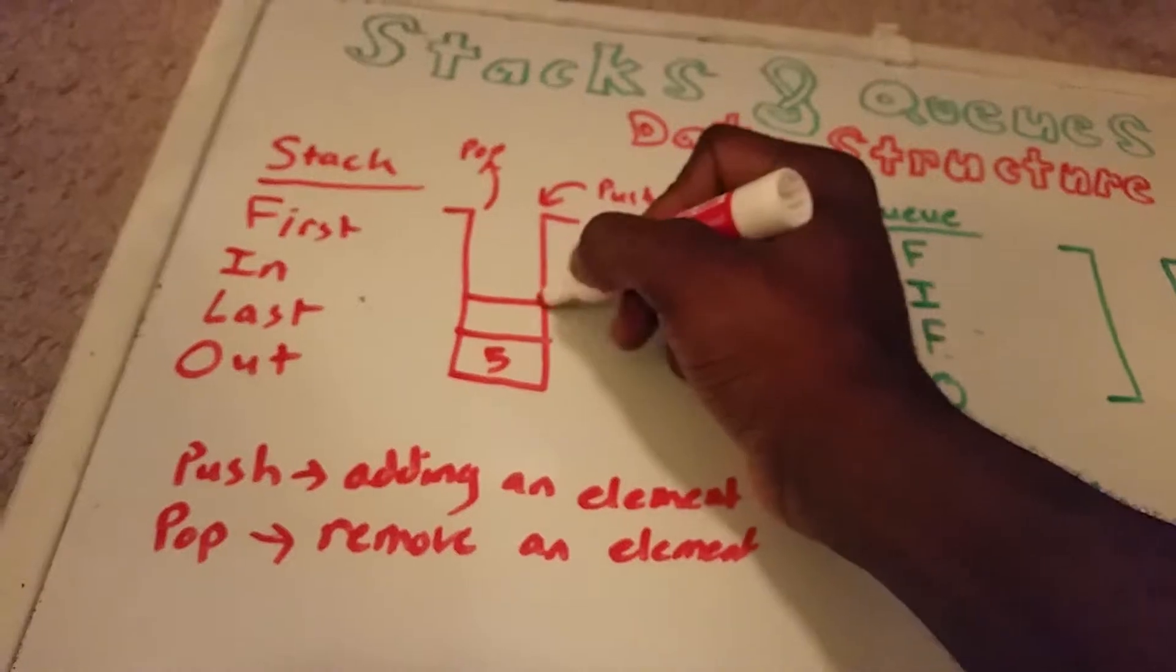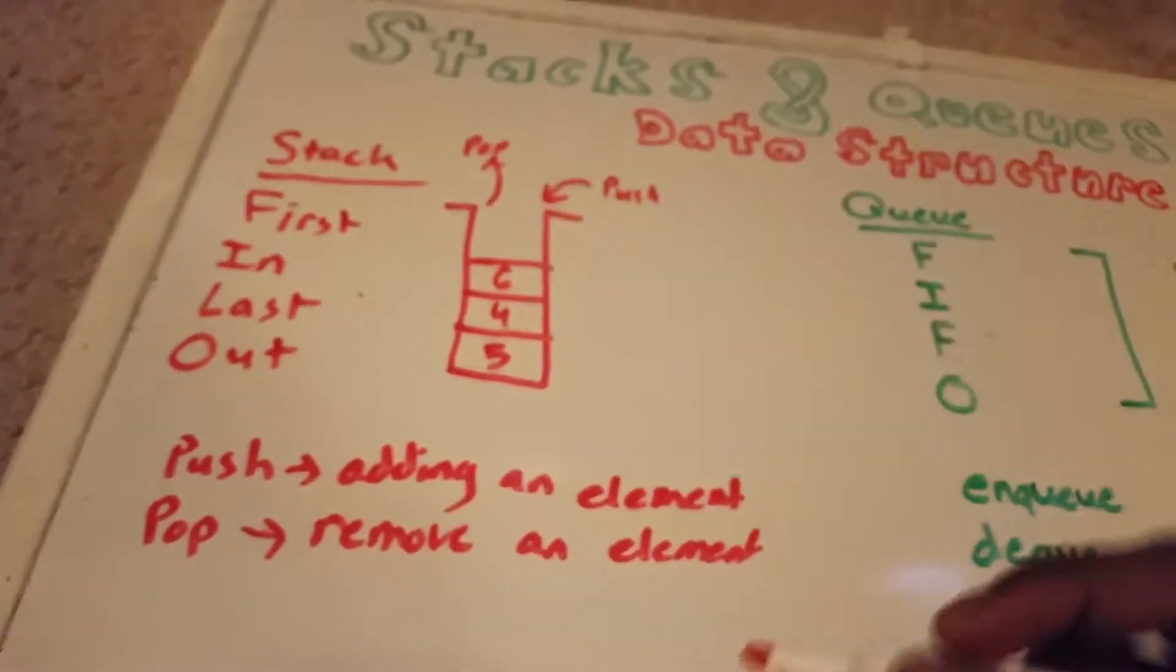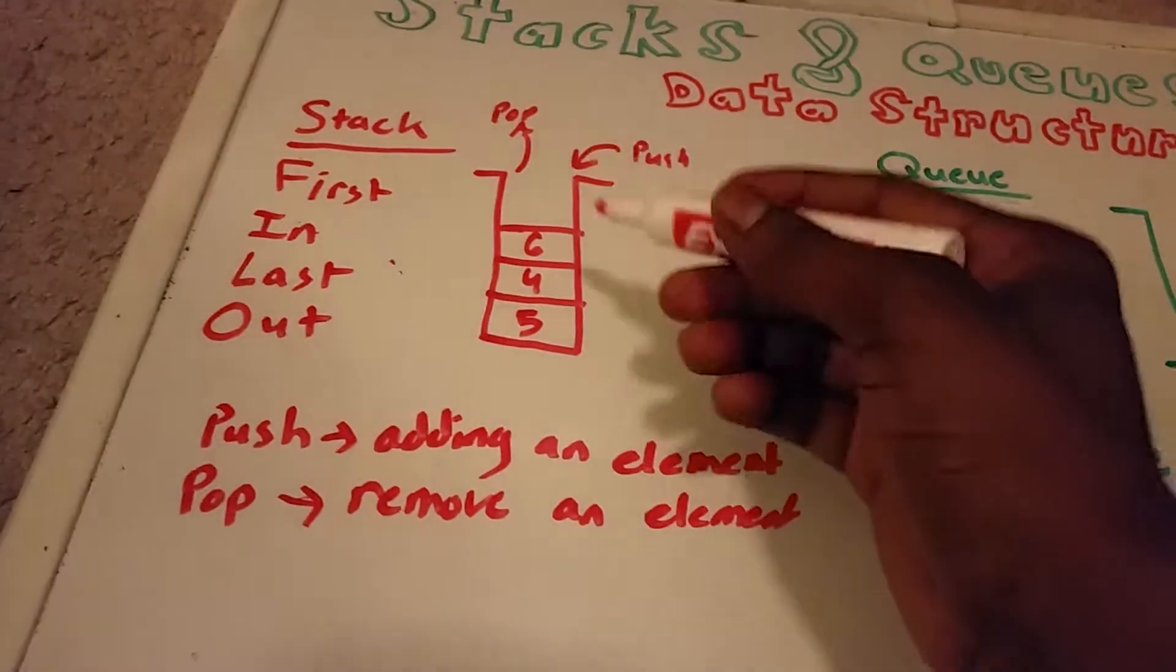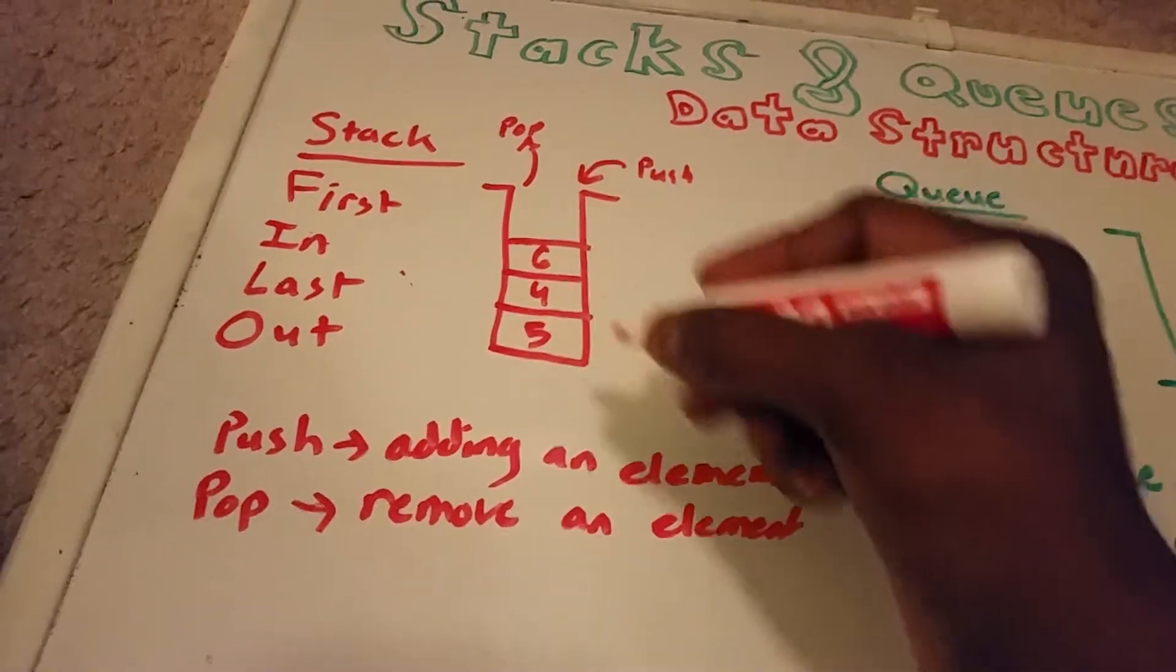So I have 5 and 4 and we'll say I have 6. So now if I want to pop from the stack, I pop the first element, which is 6.